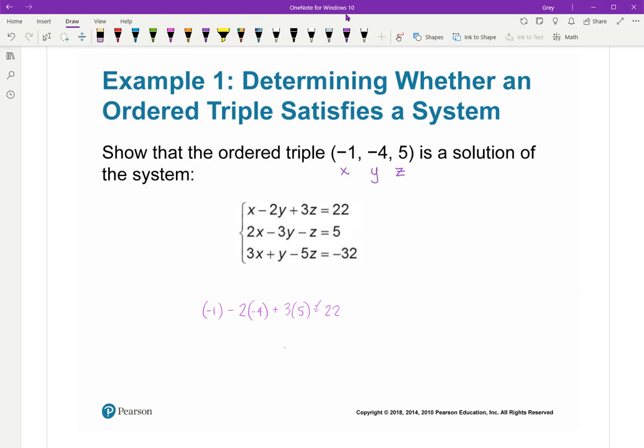I put that in my calculator, and I get 22. Then I'm going to go to the next one, 2 times X minus 3Y minus Z. Does that equal 5? I'm going to plug in for X, Y, and Z. And yes, I get 5. And plug it into the last one.